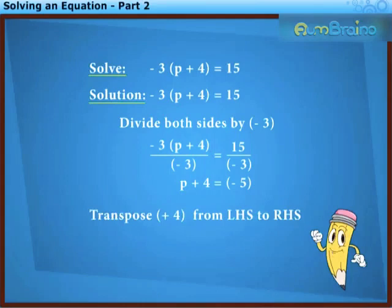Now let us transpose plus 4 from LHS to RHS. On transposing, plus 4 becomes minus 4. Thus we get p is equal to minus 5 minus 4. That is, p is equal to minus 9.